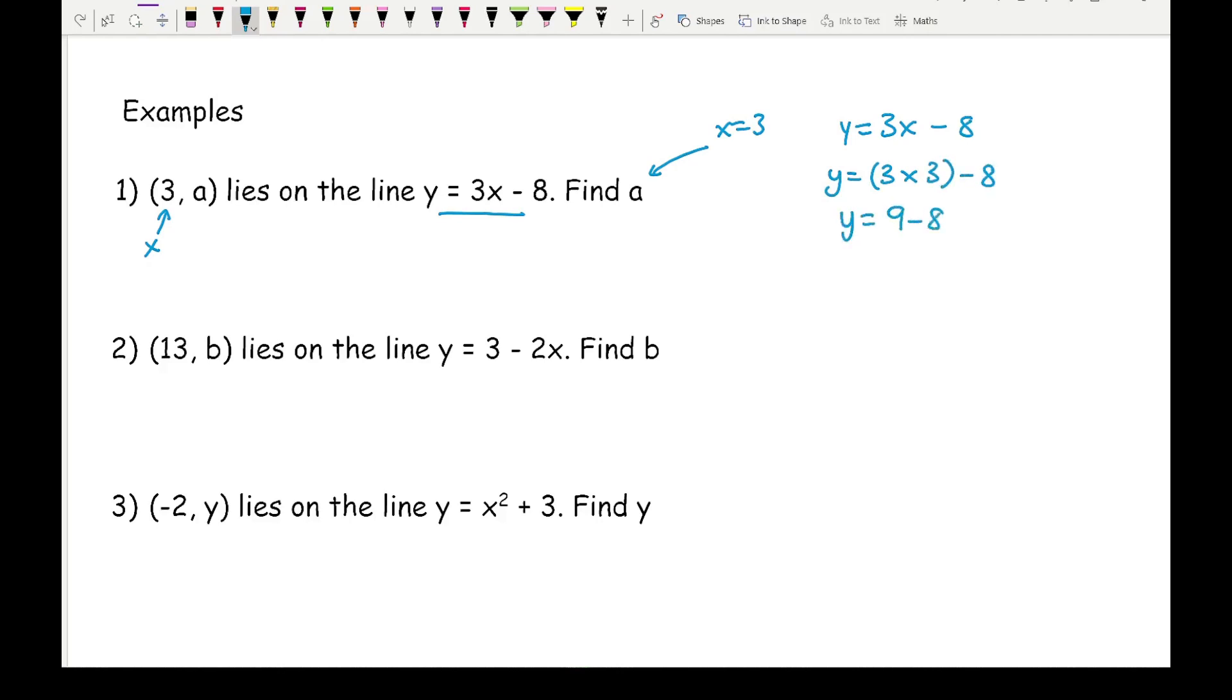I get 3 multiplied by 3 take away 8. So y equals 9 minus 8, which gives y equals 1. So we've got the coordinate (3, 1) or we can say that a equals 1.